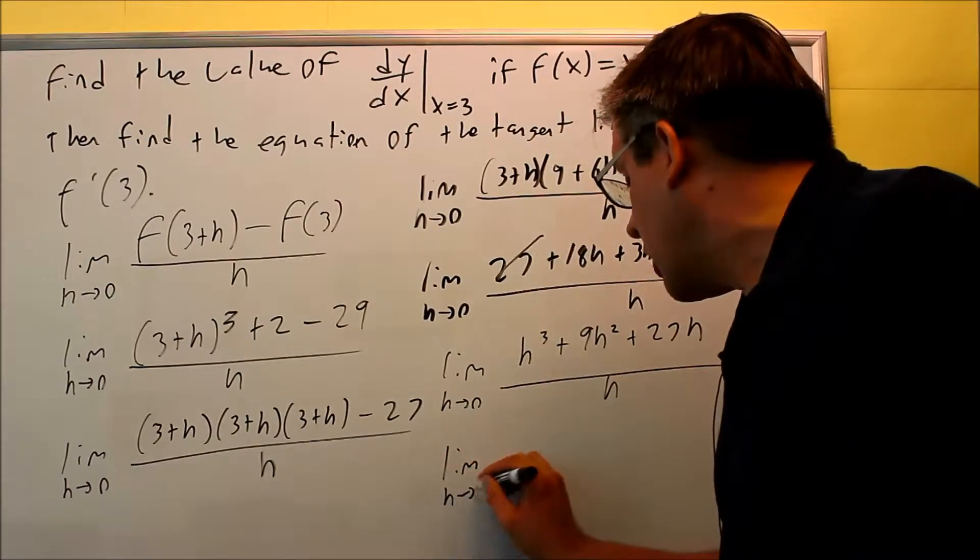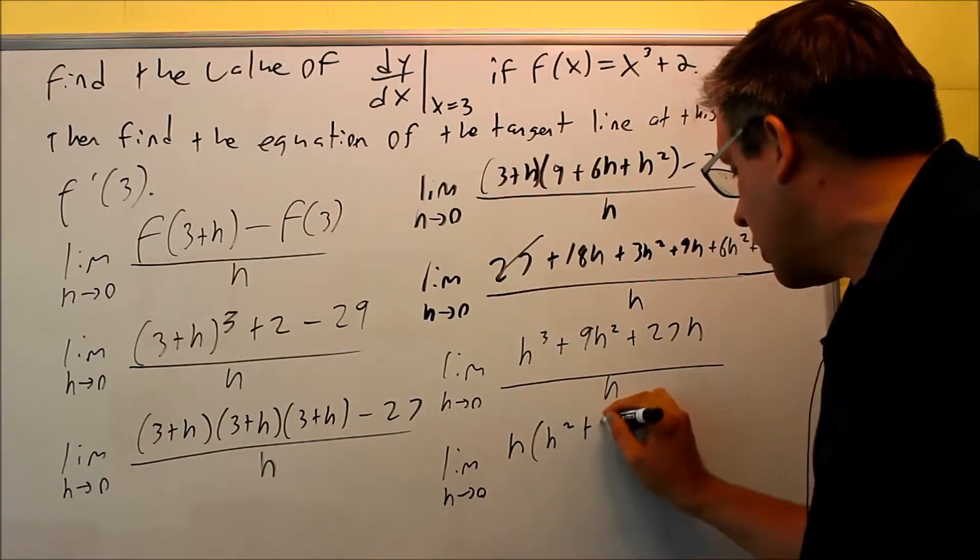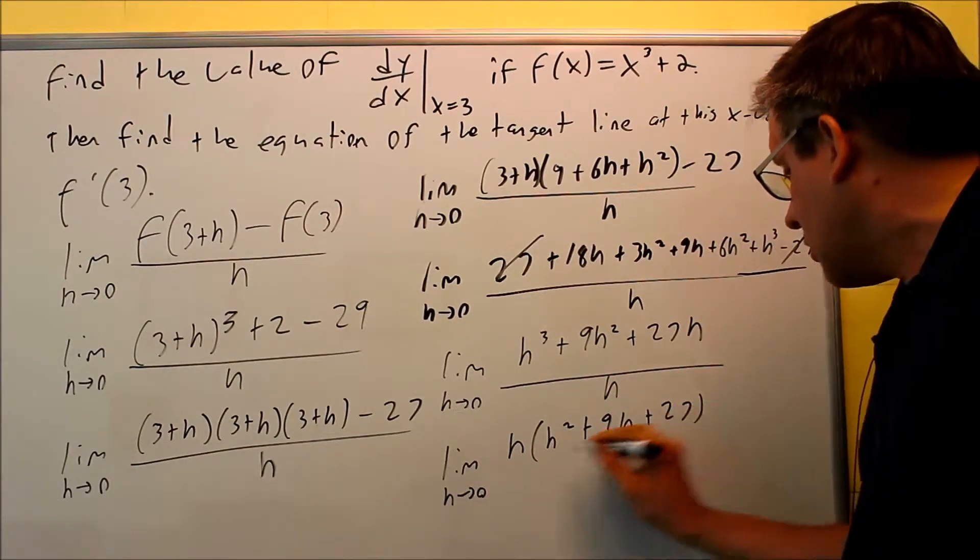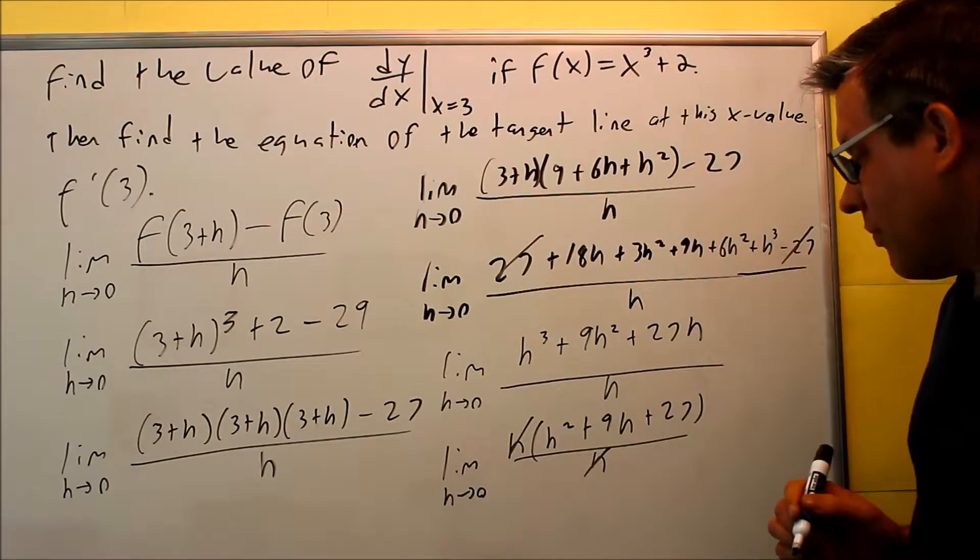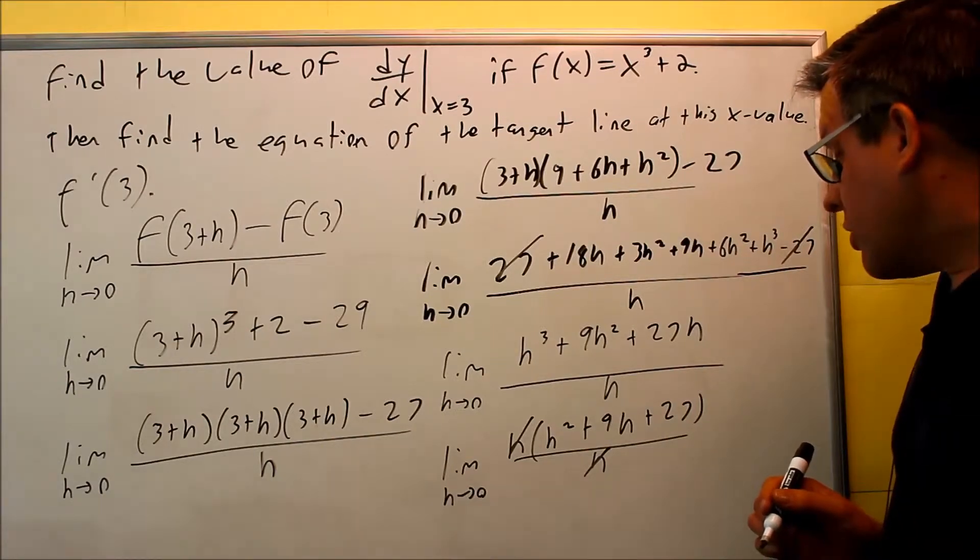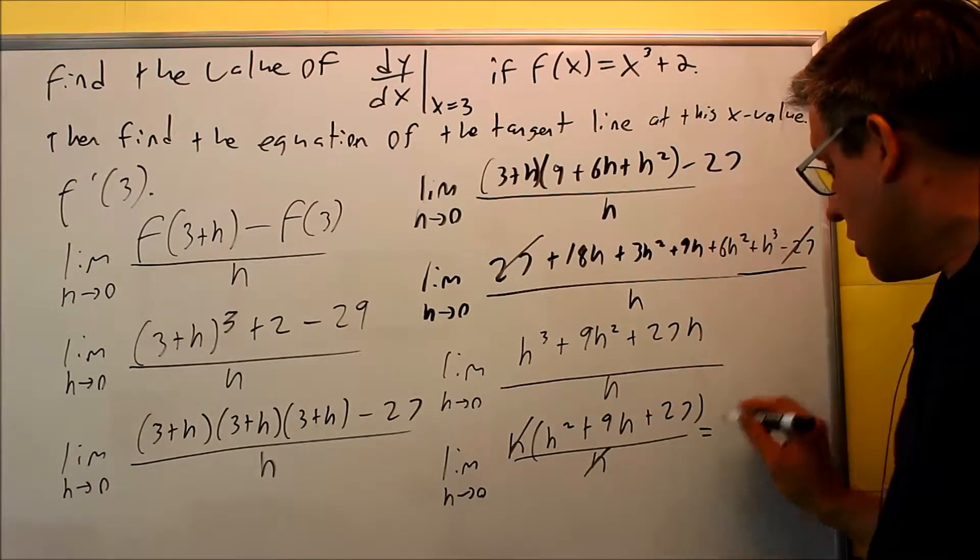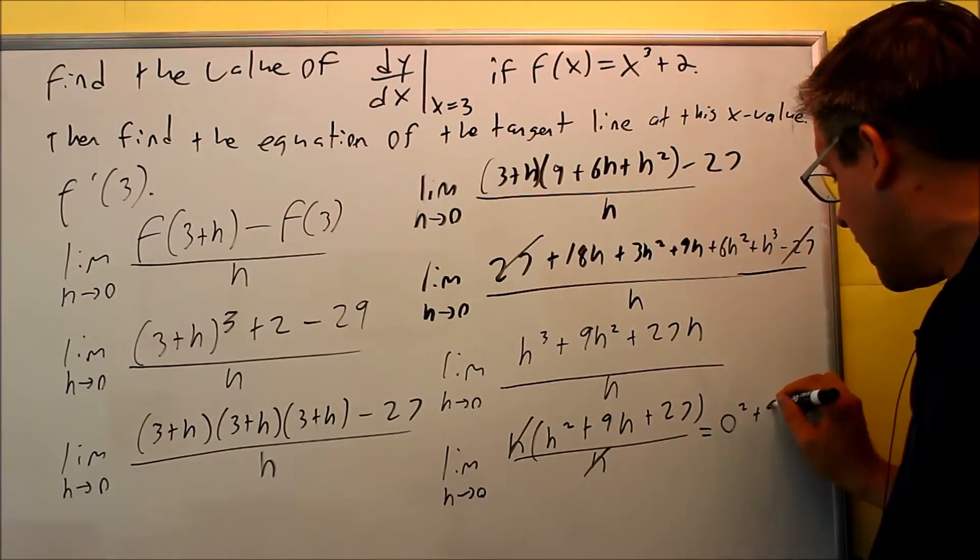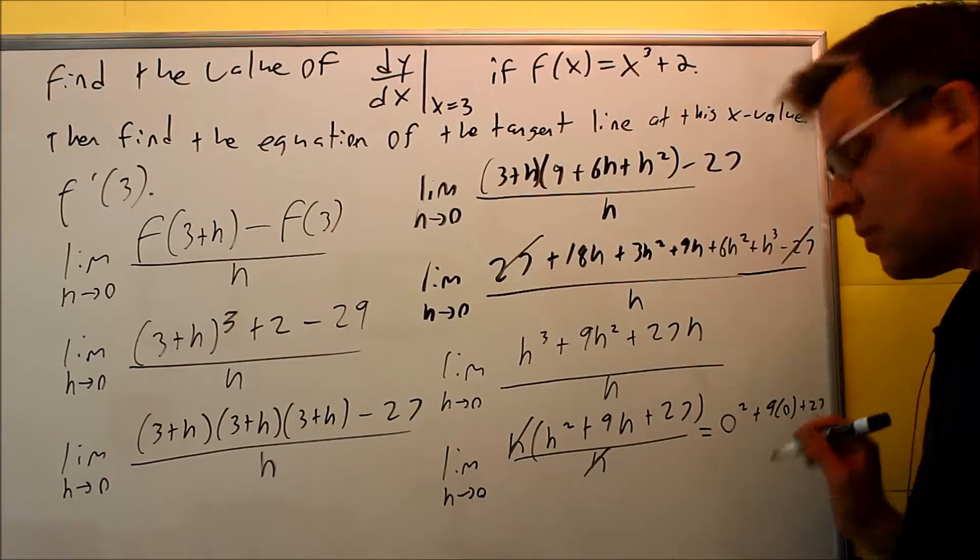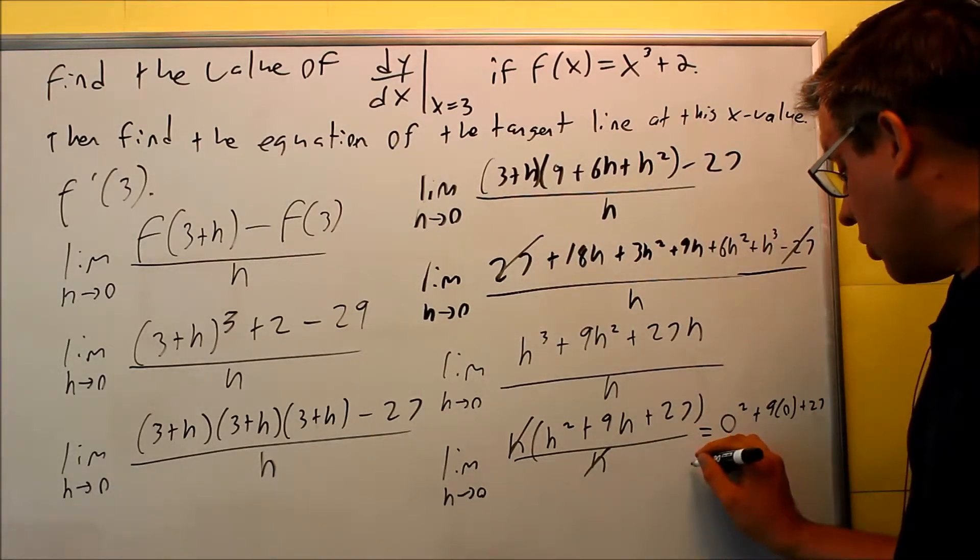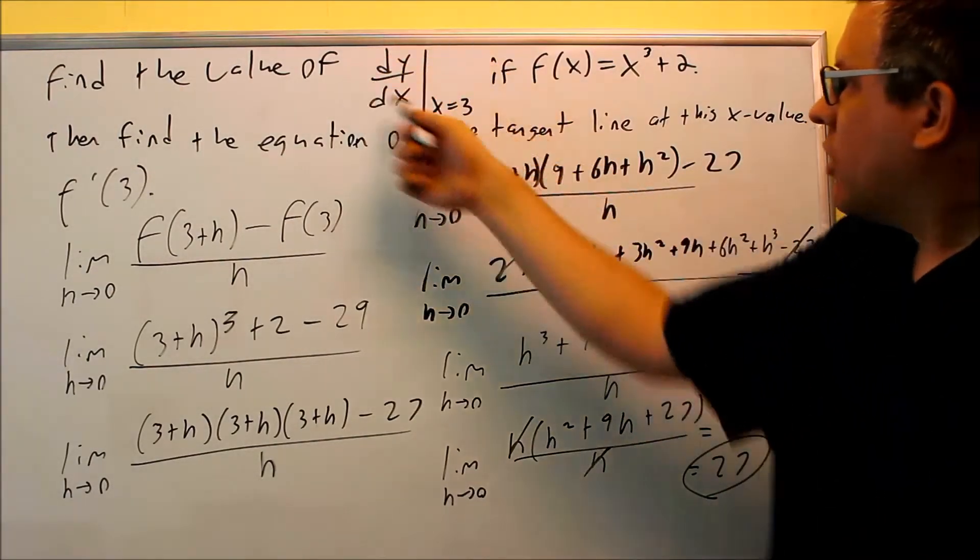We're finally down to a point where we can factor. So I'm going to pull an h out of the top: h squared plus 9h plus 27, over h on the bottom. We can cancel out the h's. Once we cancel that out, we're ready to plug in zeros for both of those. And if I do, I get 0 squared, 9 times 0 plus 27. So then, that's going to equal 27. So 27, that's the answer for this.